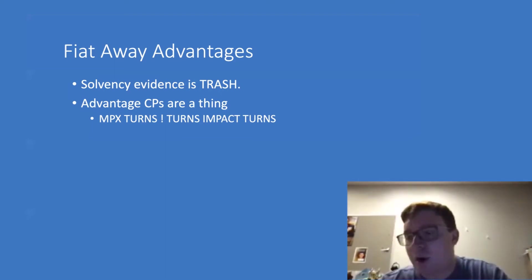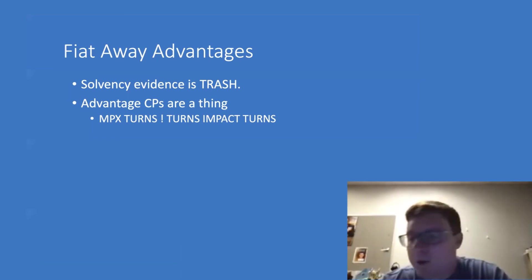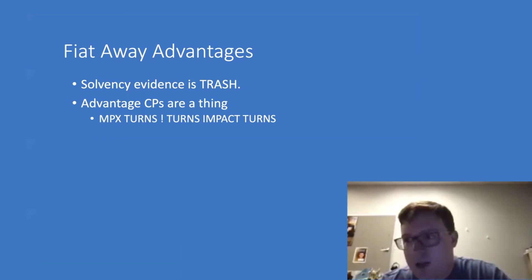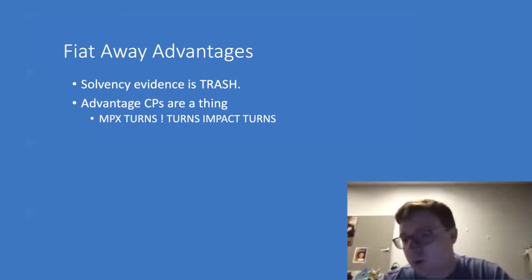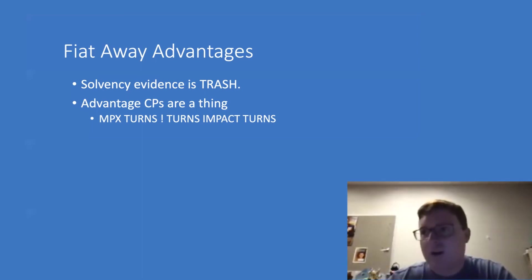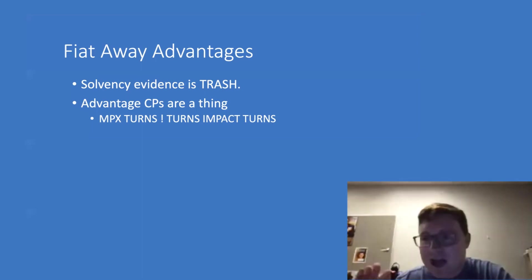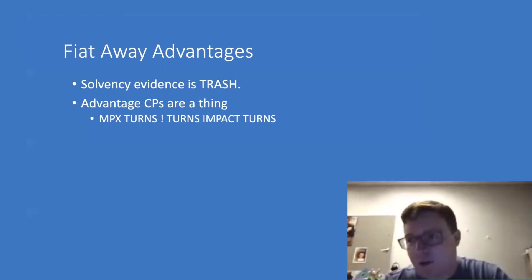Even if the 2AC responds card for card, they're going to get buried in the neg block and the 1AR won't have enough time. A lot of times you can advantage counter plan out of it and then impact turn something you have the goods on. If you are not an impact turn debater, I'd encourage you to look at some impact turns this season, because a lot of times you're not going to be able to catch up with all the internal link work people are doing. Being able to just meet them at the end with an impact turn can easily allow you to fiat away advantages.